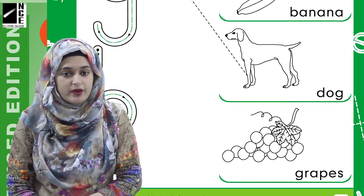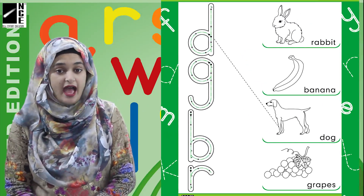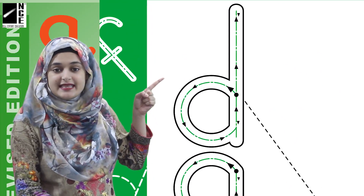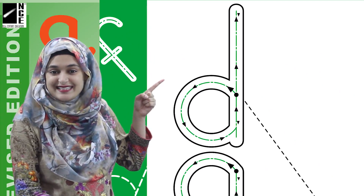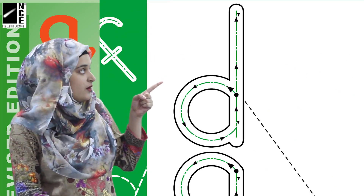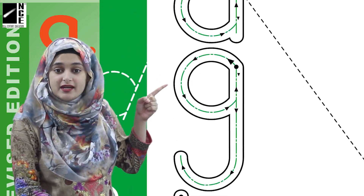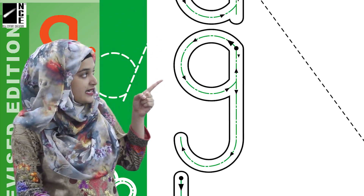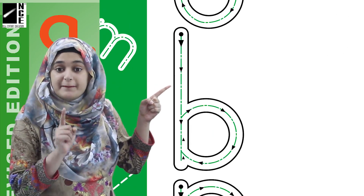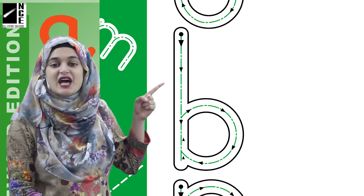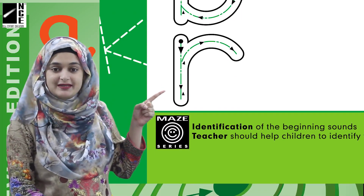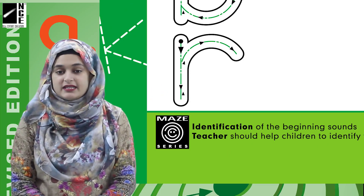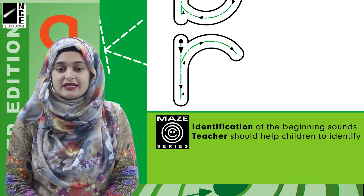Now I am going to ask you about the letters we have on this side of our worksheet. Tell me children, what is this? This is D. Very good, excellent. Now tell me what is this? This is G. Yes, this is G. Very nice. This is B. And what is this one? This is R. Amazing. So we have the letters D, G, B and R here.